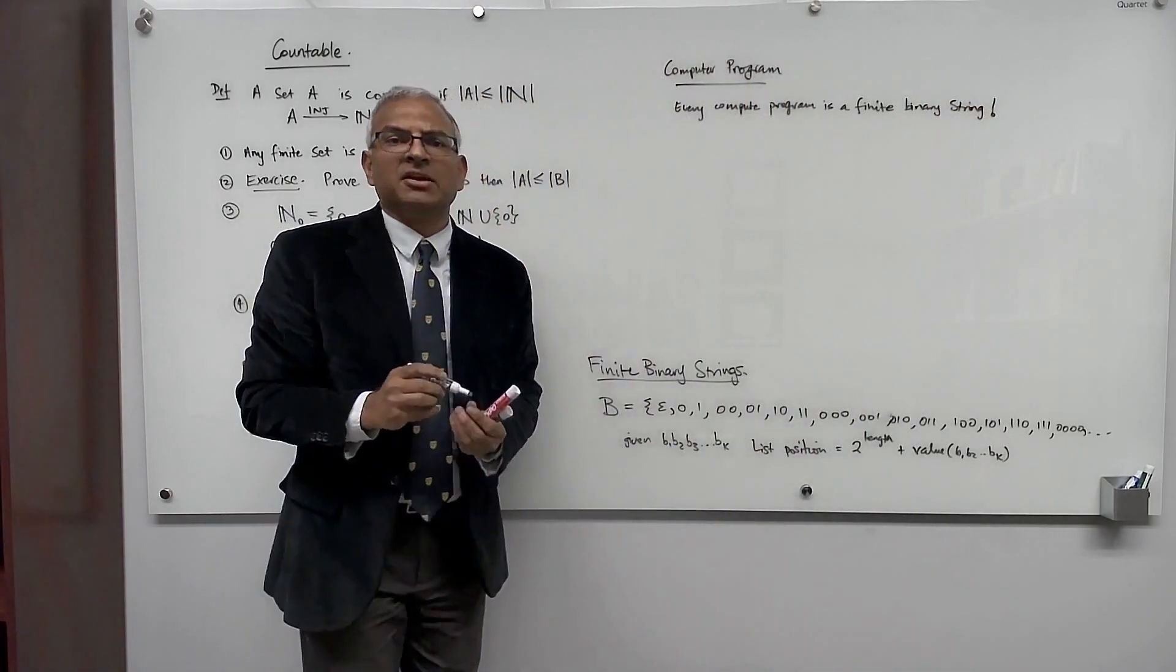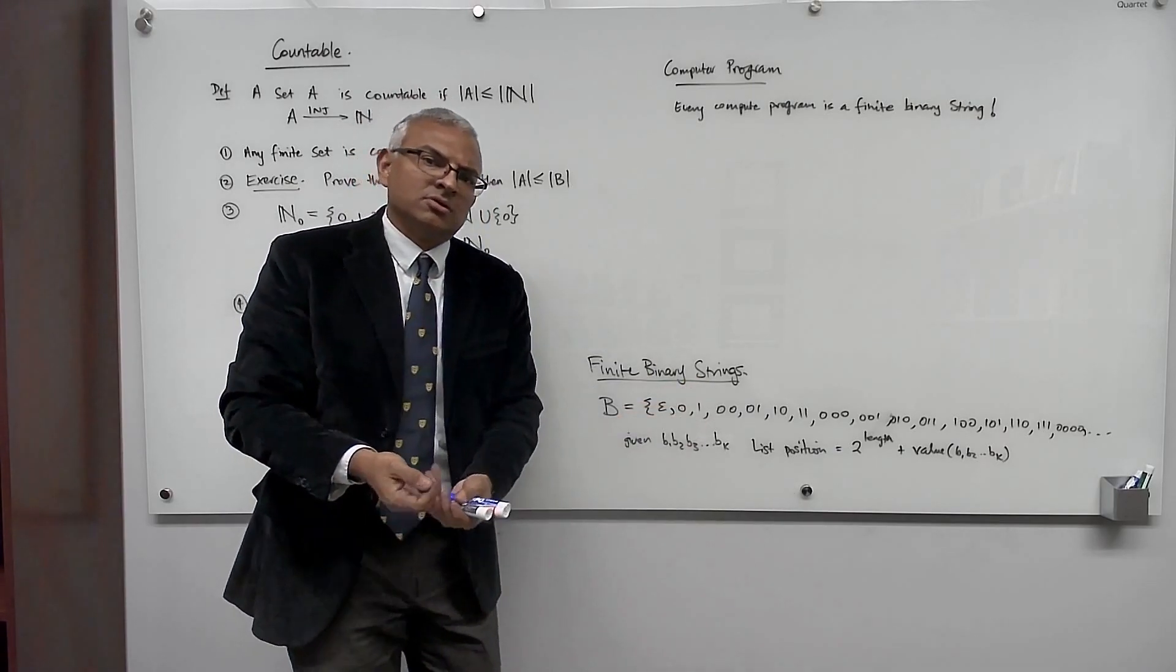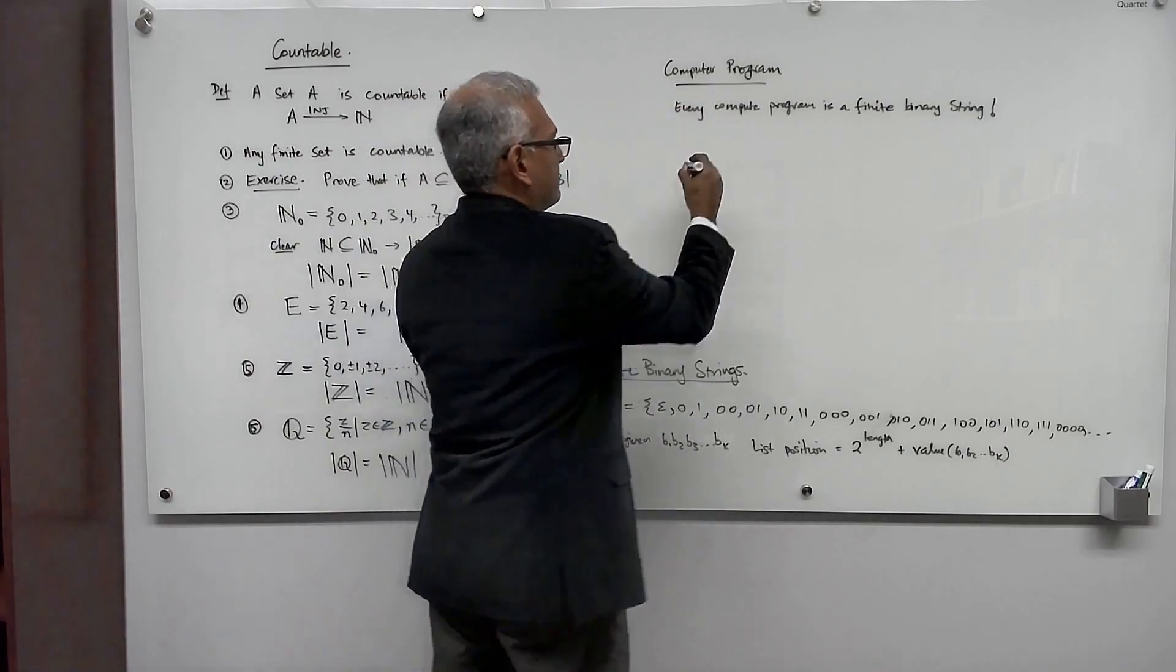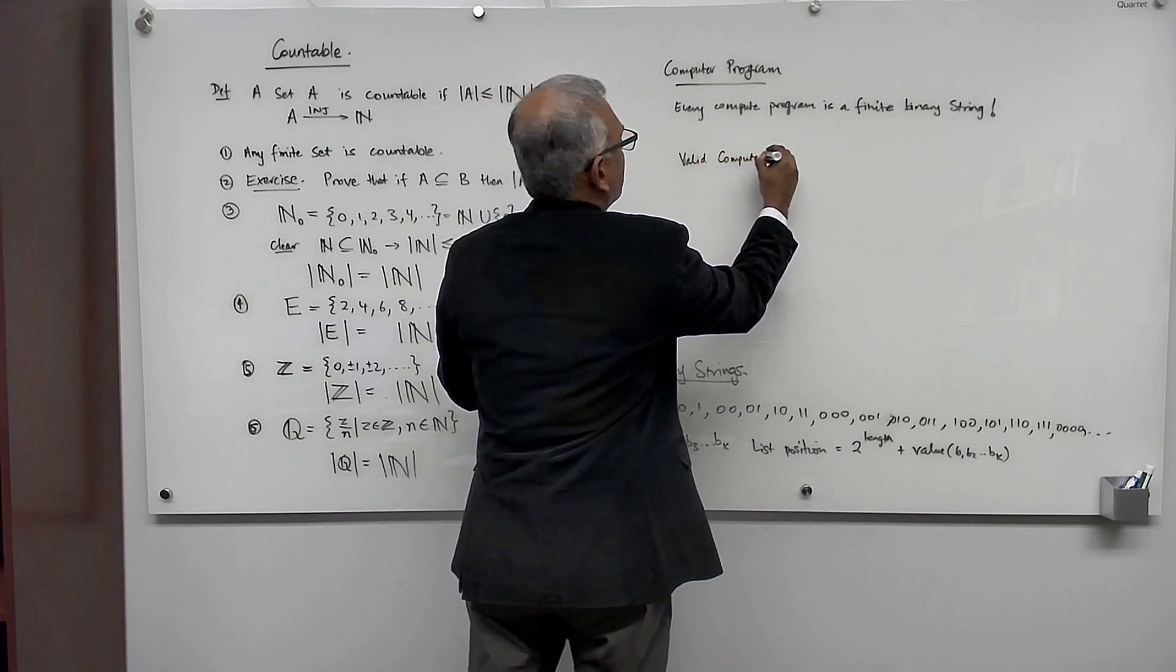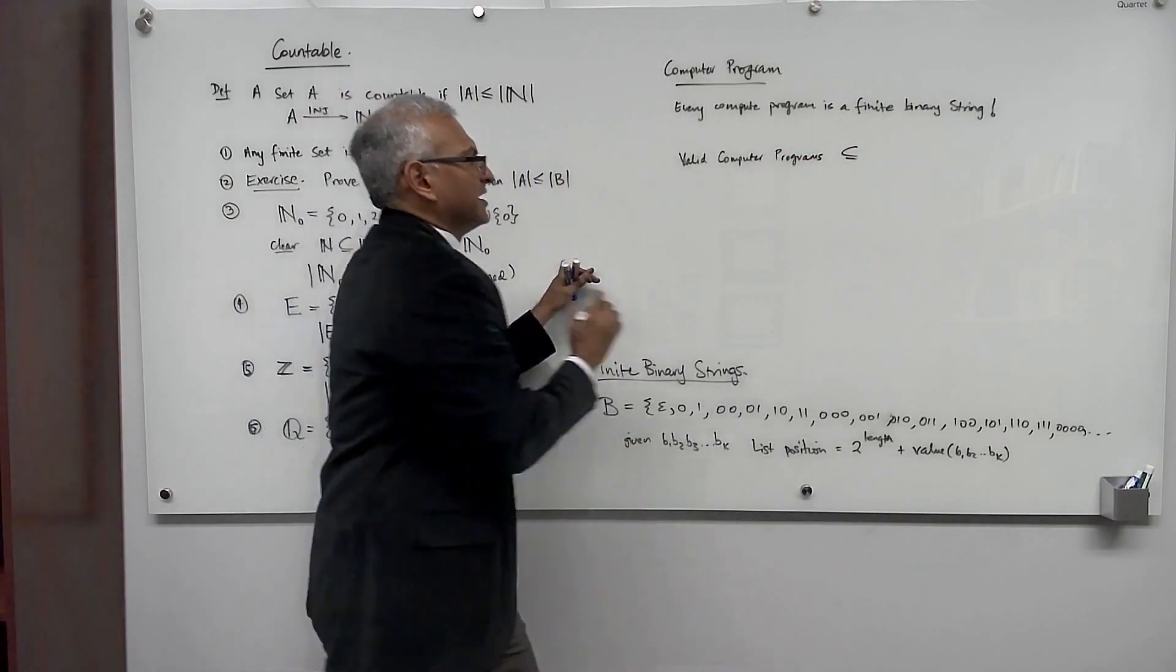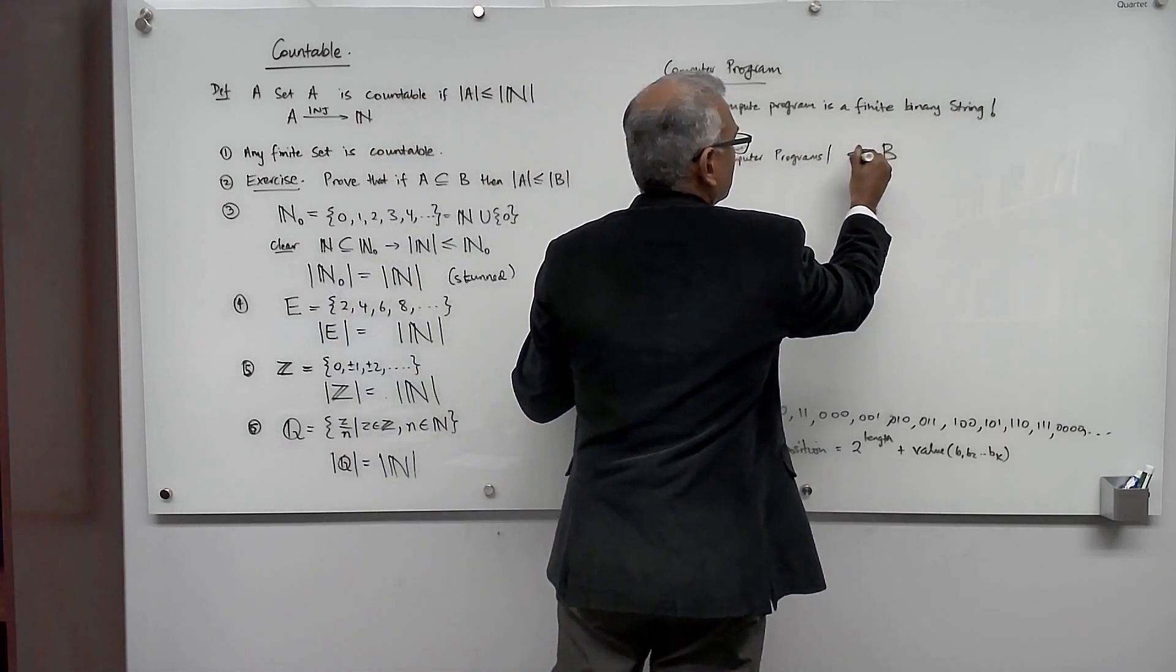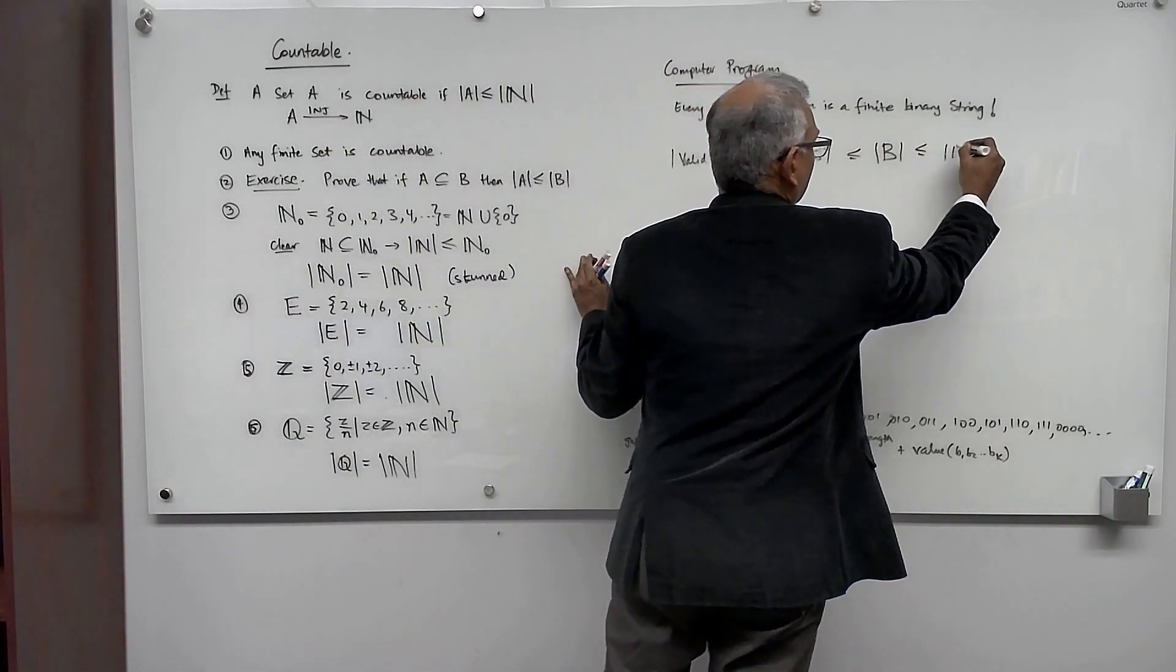Now not all finite binary strings are valid computer programs, but in principle any finite binary string could be treated as a computer program, but it just doesn't do anything. It just doesn't work. So the valid computer programs are a subset of the finite binary strings. And so that means that the cardinality of the valid computer programs is at most the cardinality of the finite binary strings, which is at most the cardinality of the natural numbers.